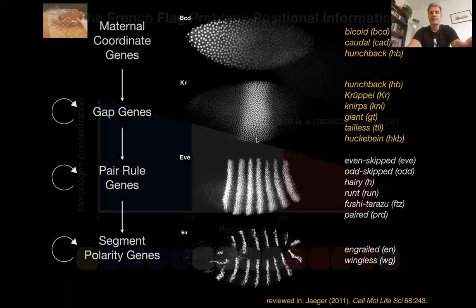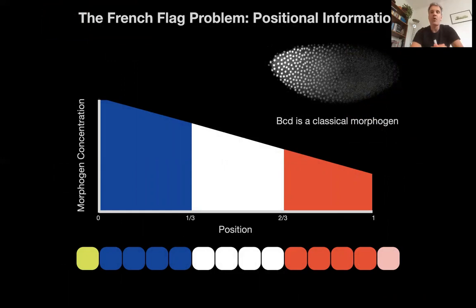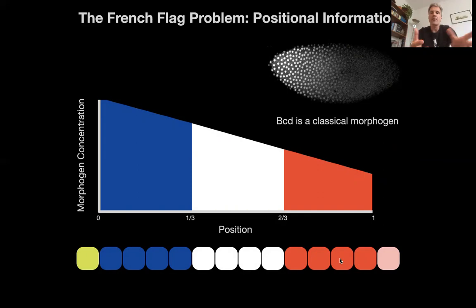We're going to look at how you get from the gradient to these overlapping gap domains. Classically this is seen as a French flag problem, as Wolpert posed it in 1968. Bicoid is a classic morphogen, and cells in the embryo are supposed to read out specific concentration thresholds and interpret them by switching on different sets of differentiation genes. I argued that this model is more about tracking the precision of information — how precisely can a cell read out the gradient — rather than looking at the actual mechanism.